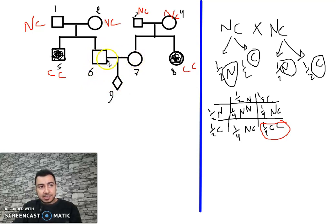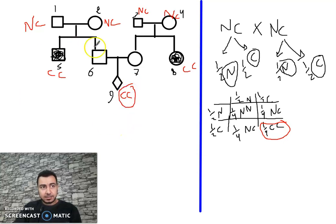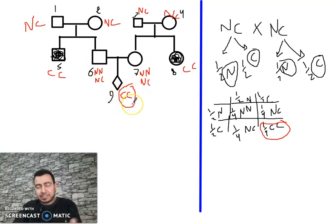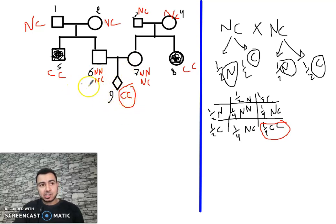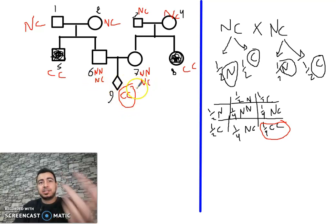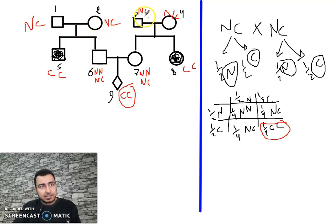We want to know if 6 and 7 can have an affected child (CC). The parents (1 and 2) are NC × NC. For child 9 to be affected (CC), we must first determine the probability that 6 and 7 are carriers (NC). Their parents' cross gives: 1/4 NN, 1/4 NC, 1/4 NC, 1/4 CC. Since 6 is known to be normal, CC is impossible.